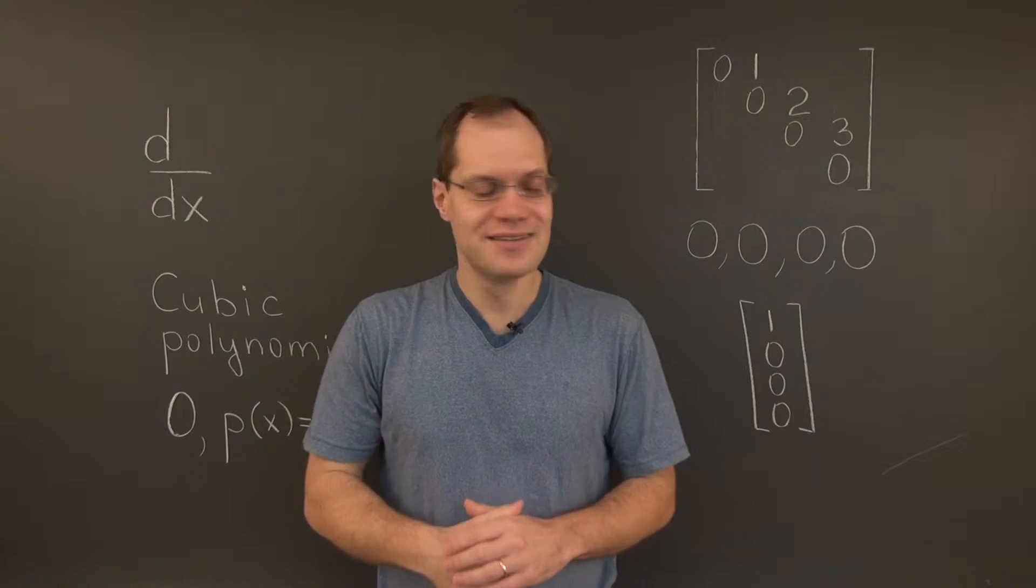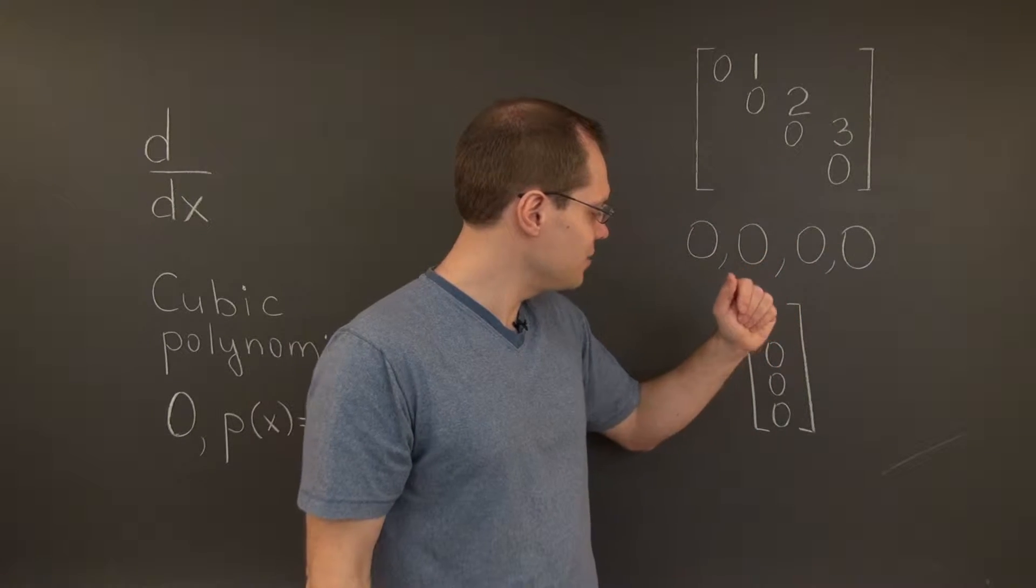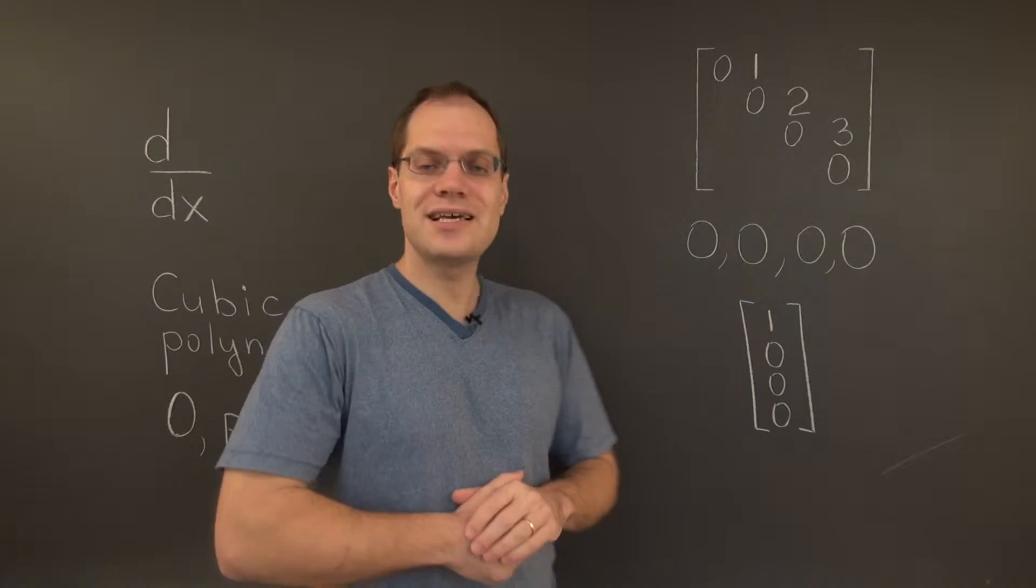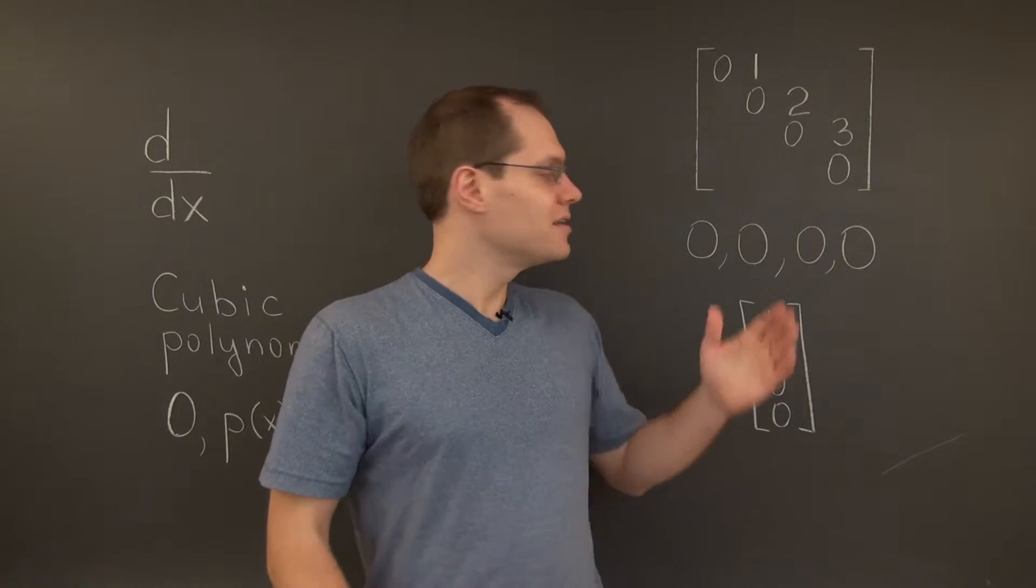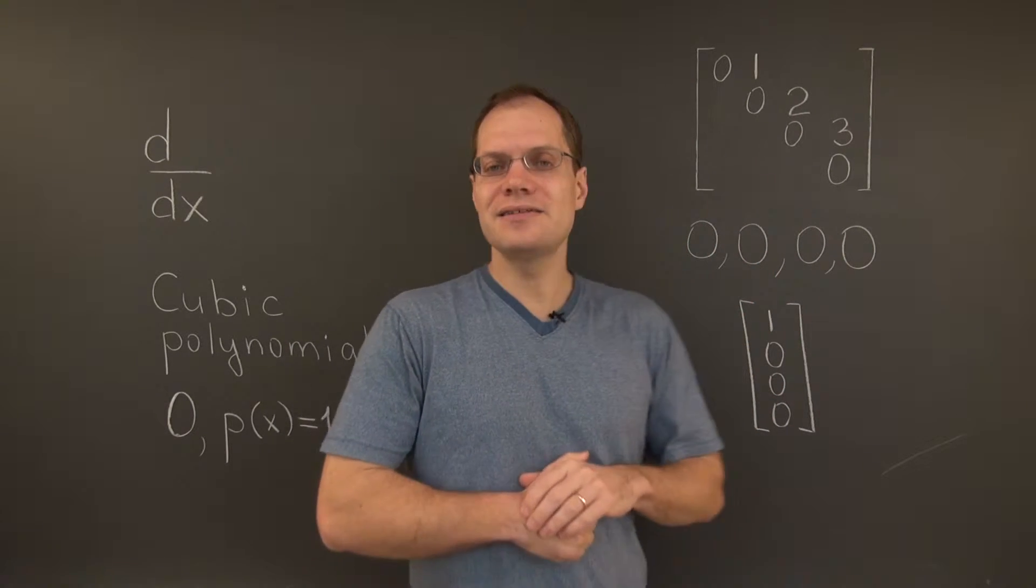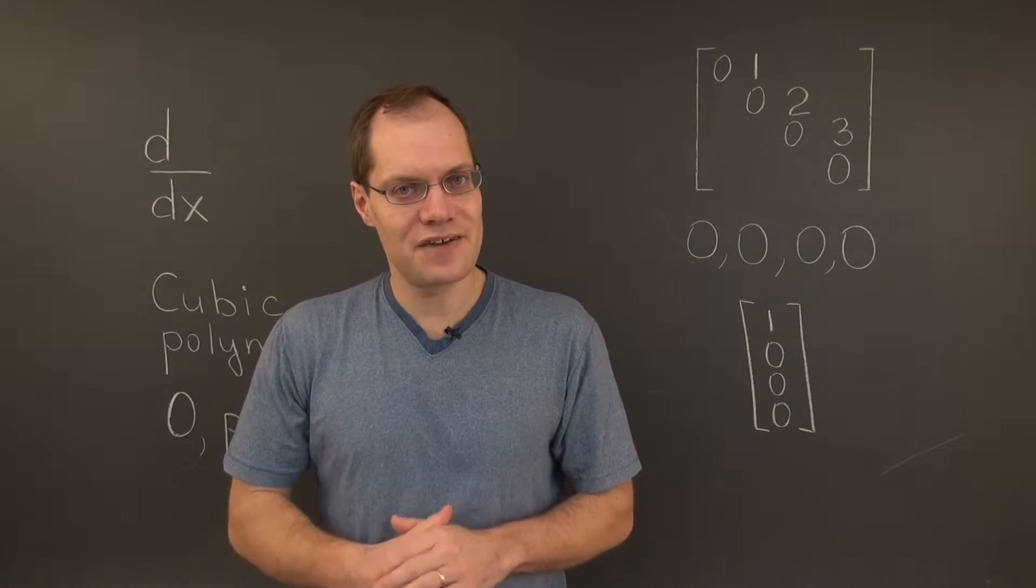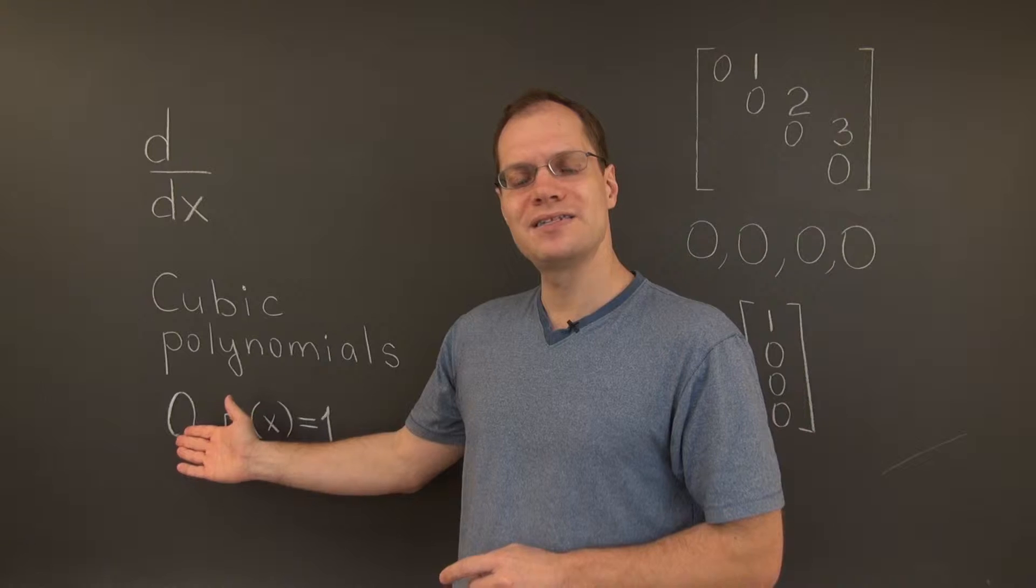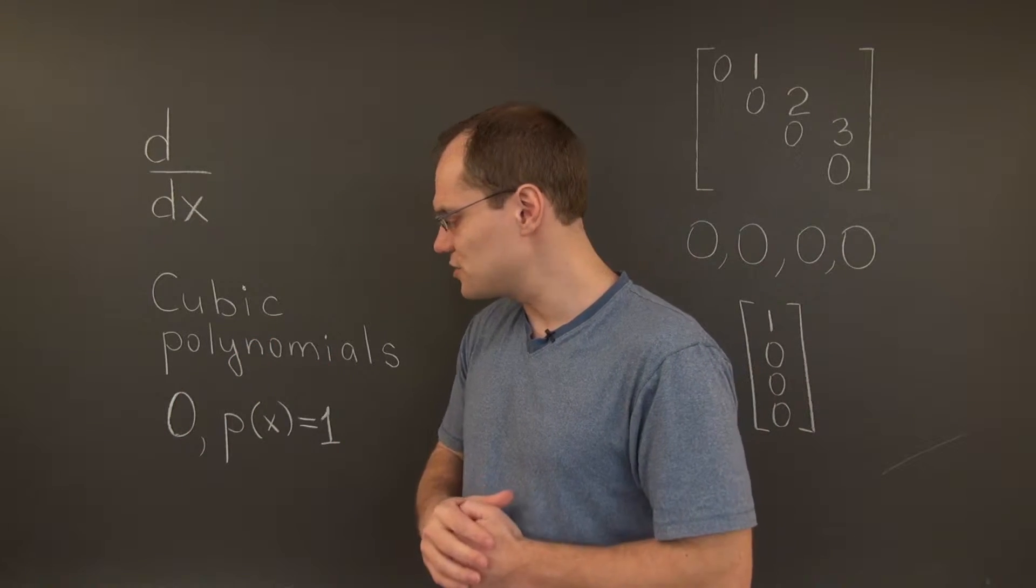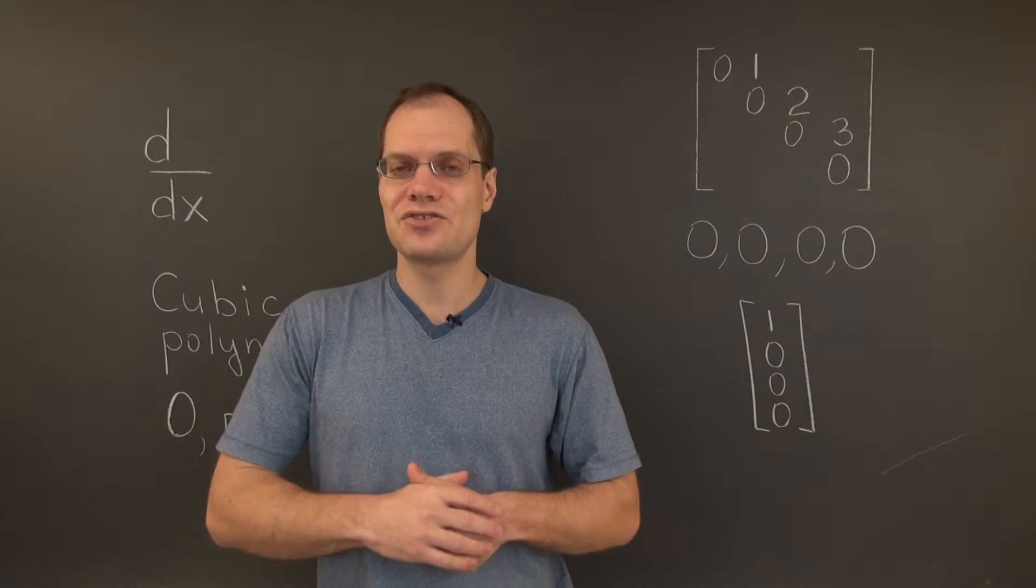So indeed, this is a quadruple eigenvalue with a one-dimensional eigenspace. So this matrix is defective, and the defect is 3. And therefore, the original linear transformation is defective, and the algebraic multiplicity of the eigenvalue is 4, and the defect is 3.